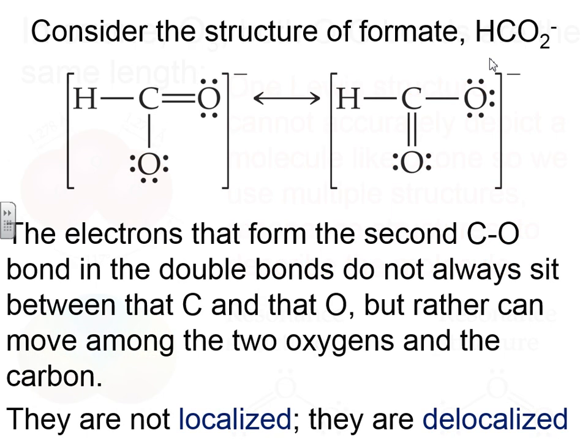So a good example is this polyatomic ion called formate. The electrons that form on the second CO bond can actually move. In other words, these electrons right here, the second bond, can move from here to here and then back again. So these electrons are allowed to move because you have equivalent bonds, since you have equivalent atoms. Electrons cannot move this way. This is not allowed, partly because hydrogen can't accept more than two electrons. But even if it were a fluorine, that would not happen. It's between equivalent atoms that the electrons can move.